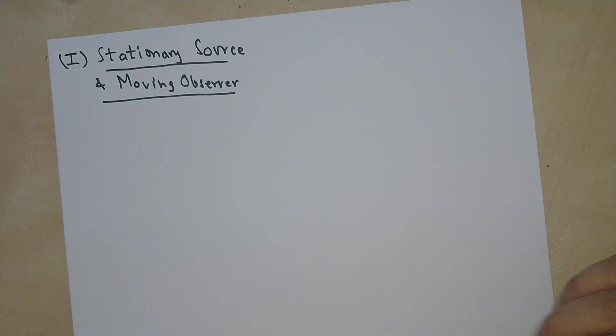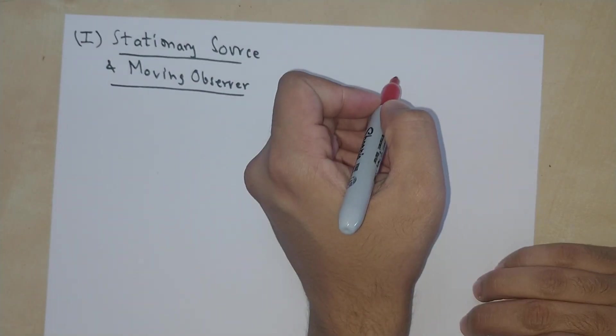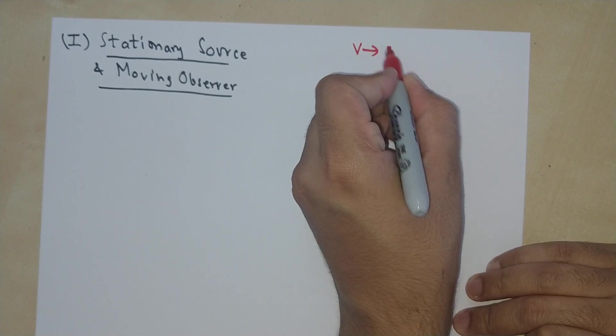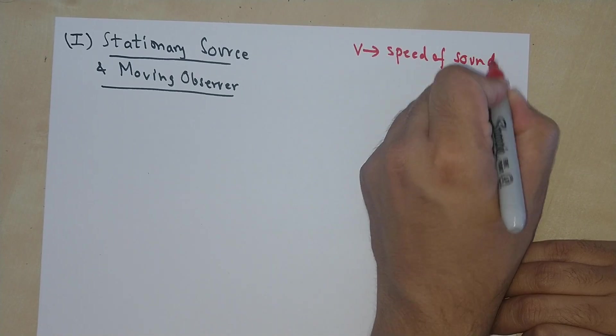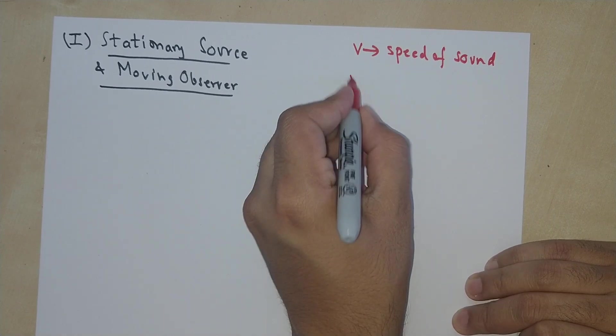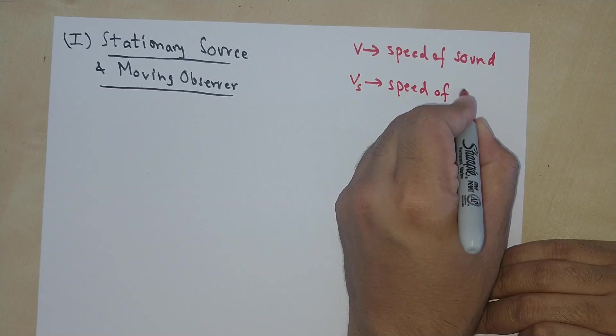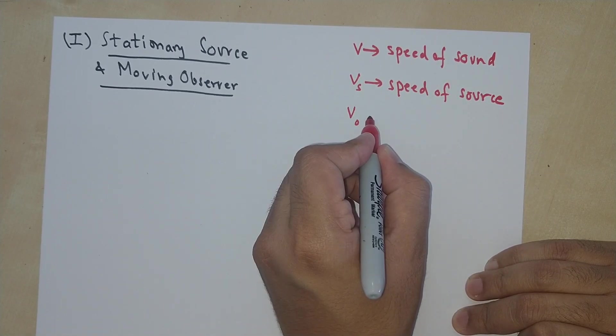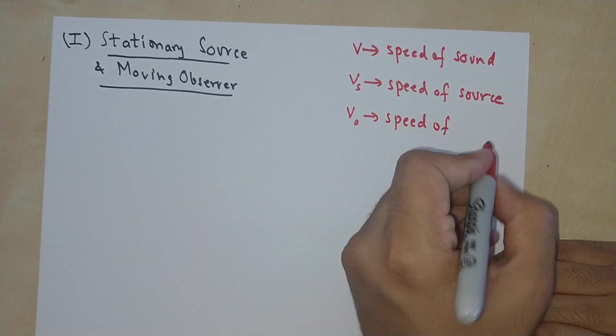So before we start, let's clarify some notation. I'm going to represent the speed of sound by V. Speed of sound. V sub s is going to be the speed of the source.